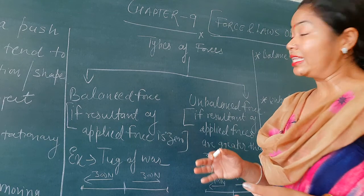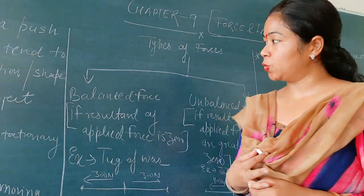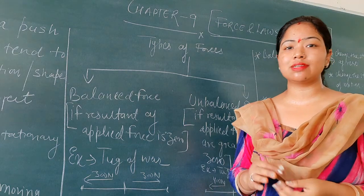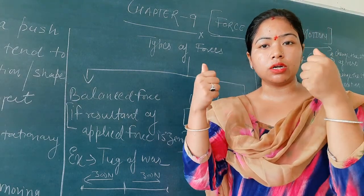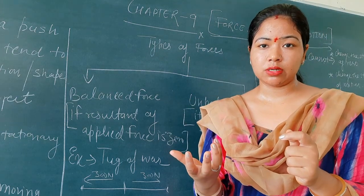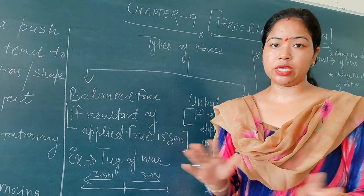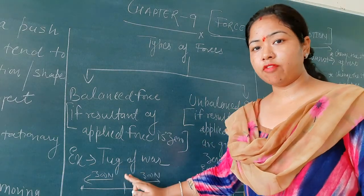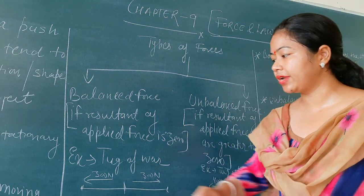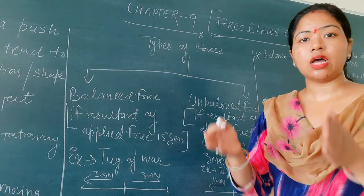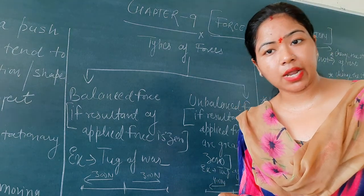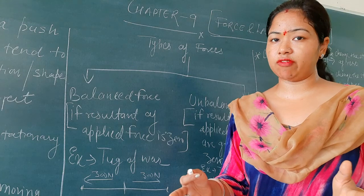These are the two situations of balanced force and unbalanced force. Balanced force is when the resultant of the applied forces is zero. When you apply the same amount of force from both sides of the rope, that is balanced force. In that situation, the net amount of force will be equal to zero. For example in tug of war, if you apply 300 Newtons to the left and 300 Newtons to the right, the net effect will be zero.